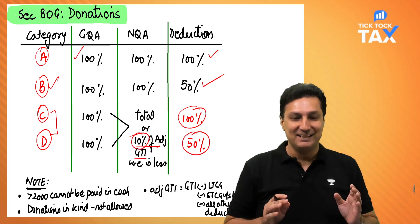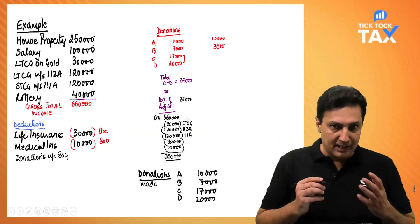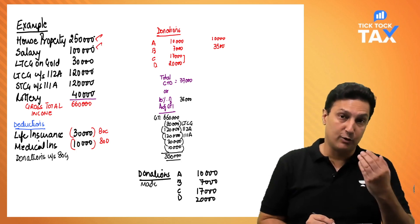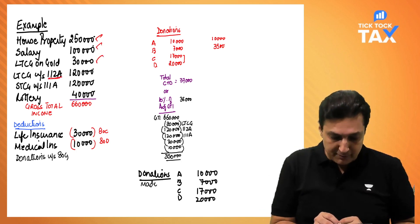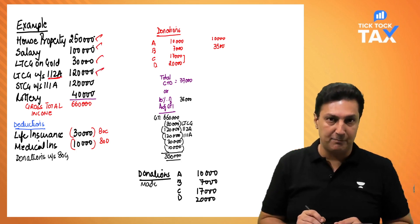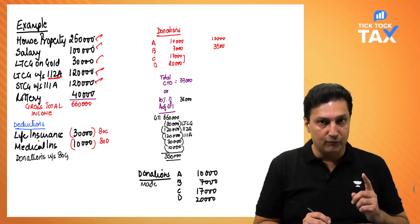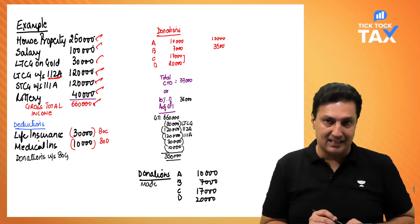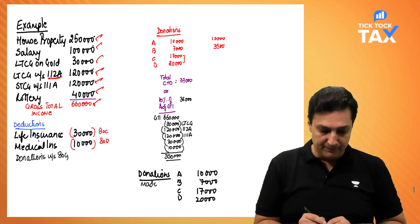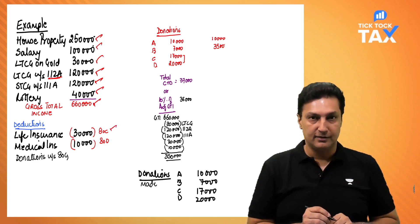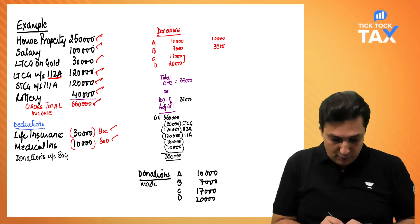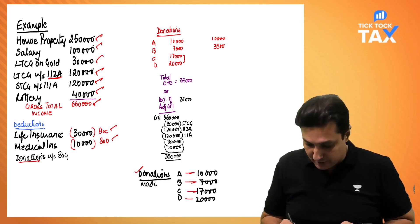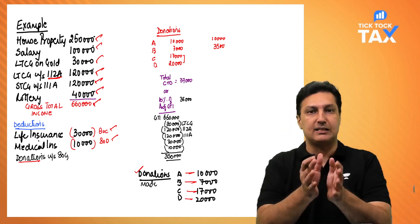Let's take a small question. Mr. X has income from house property, salary, long-term capital gains on gold, ₹1,20,000 capital gain on stock exchange shares (short-term), short-term capital gains of ₹1,00,000 on stock exchange shares, and a lottery win of ₹40,000. Total GTI comes to ₹6,60,000. He has an 80C deduction of ₹30,000, 80D of ₹10,000, and donations: A-list ₹10,000, B-list ₹7,000, C-list ₹17,000, D-list ₹20,000.